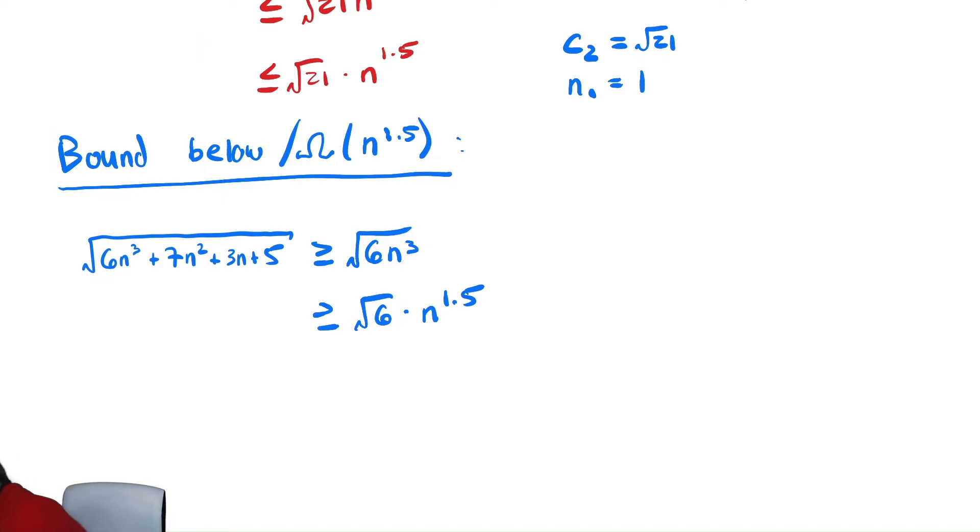So, my c1, the constant for the lower bound, is radical 6. And my n naught here is 0.